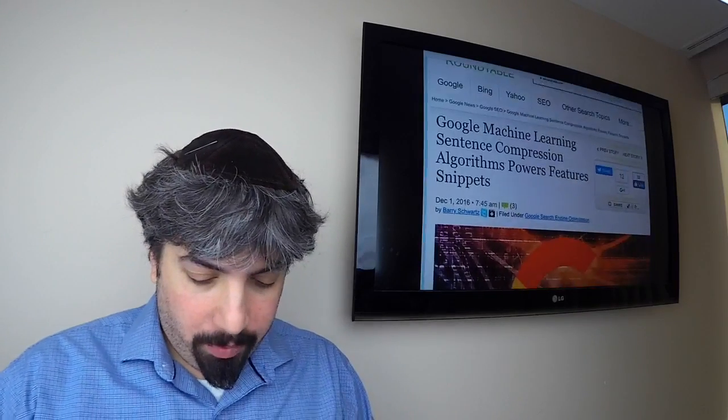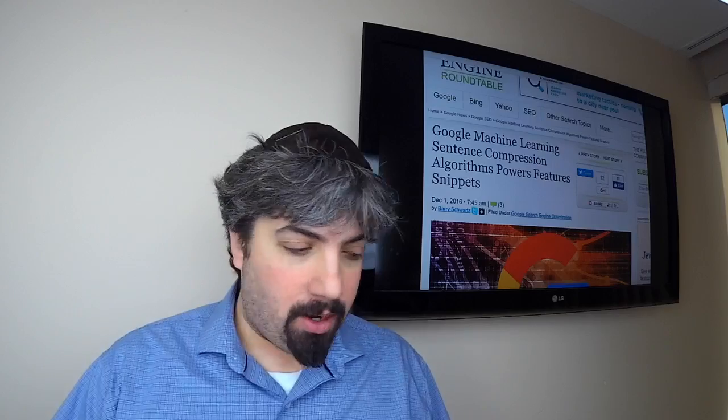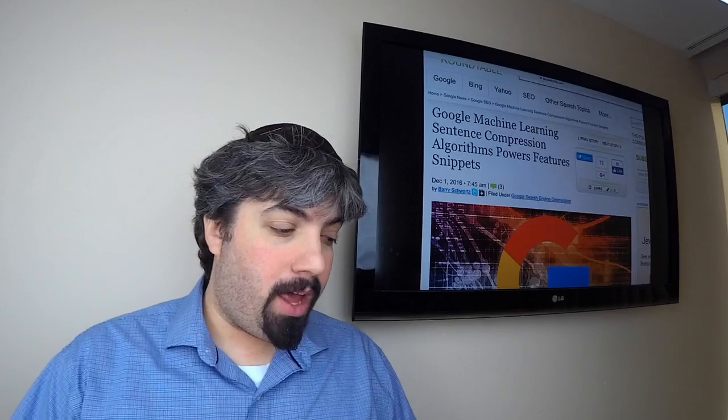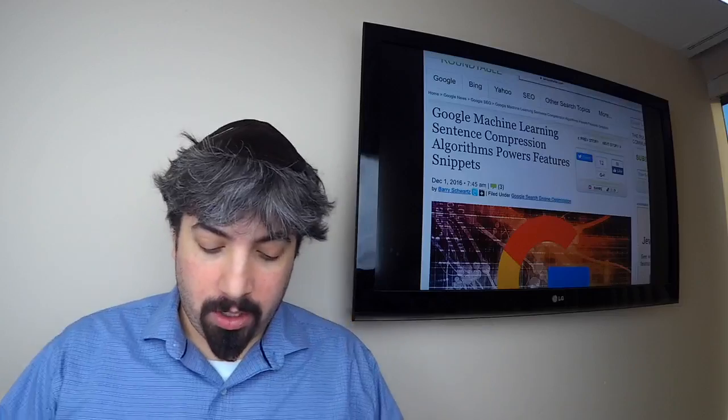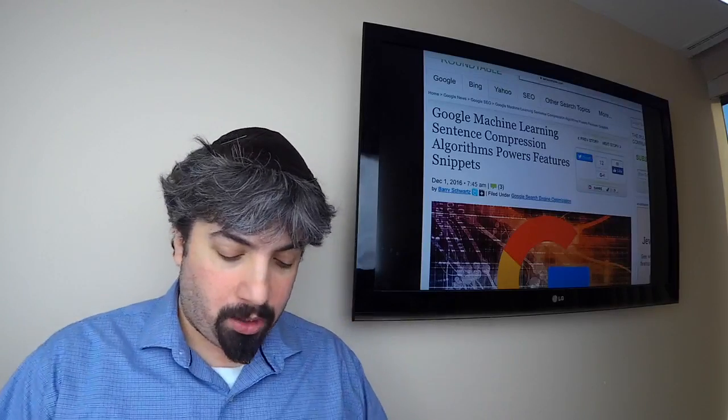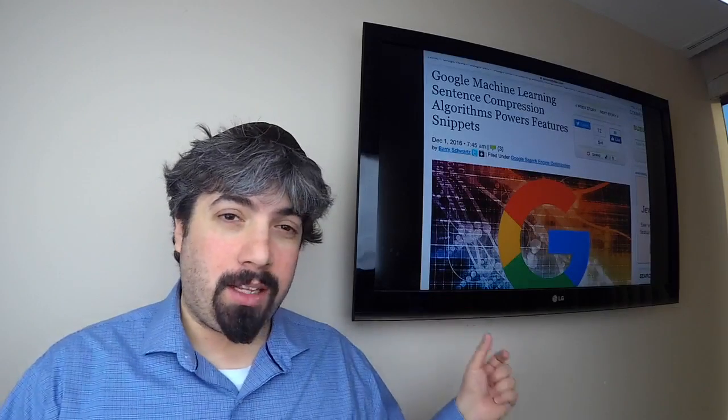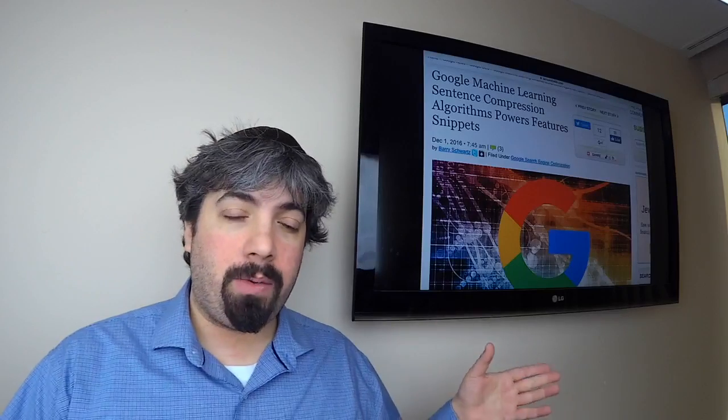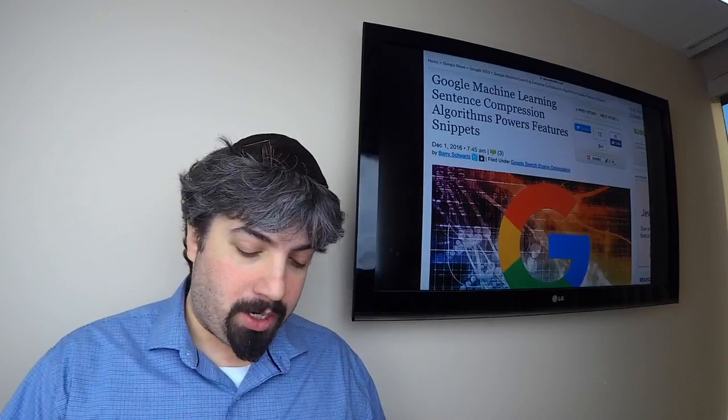First up, we got more machine learning. Machine learning is supposedly, as of this week, powering the featured snippets. A Wired article came out saying that as of this week, Google confirmed with them that the feature snippet results that come up in Google Search are now powered by using machine learning techniques, specifically using sentence compression algorithms to figure out which sentences within the actual content of a webpage should be surfaced for a specific query.